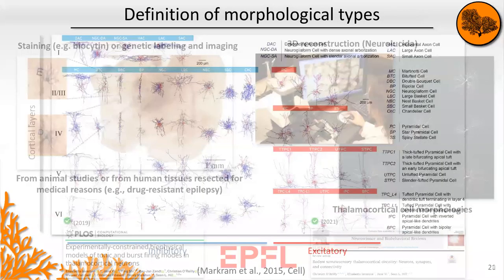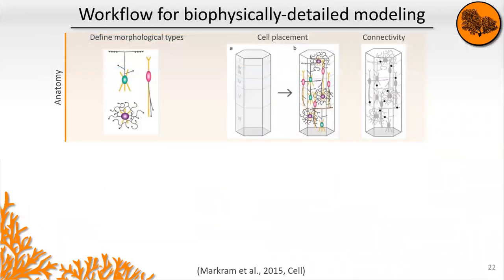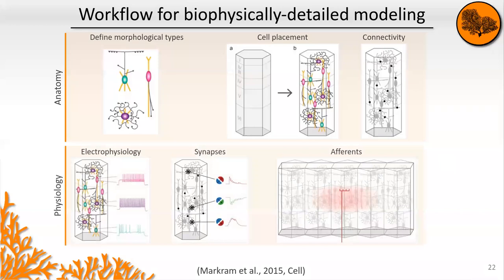If you do that with a sufficient number of cells, you start to be able to build a catalog of 3D models of these different cell types. Now you can start to go back in your model and fill the region you want to model with these different cell types in proportions that are consistent with the literature. Then you will interconnect them following rules that you get from the literature or observe through experiments. When you have done that, you have finished the anatomical modeling of your brain region. The second part is to model the physiology — how these cells behave.